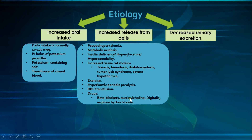Succinylcholine is a depolarizing neuromuscular blocking agent, and therefore causes depolarization of the neuromuscular junction along with blocking the receptors. This results in release of potassium from the muscle. Usually that's not a problem, but in certain individuals predisposed to hyperkalemia — such as trauma patients, burns patients, or those with prolonged immobilization — you should be careful because of possible hyperkalemia.